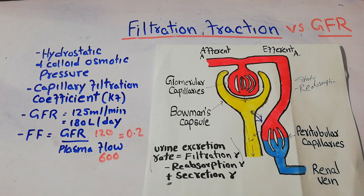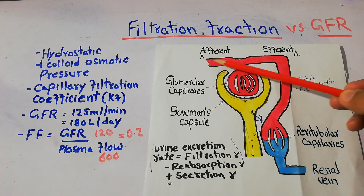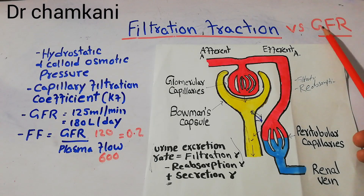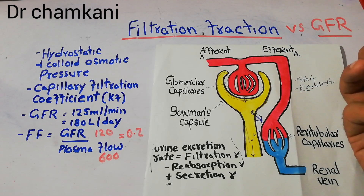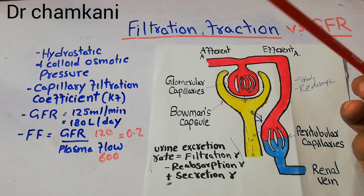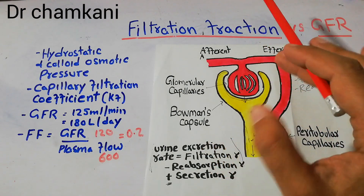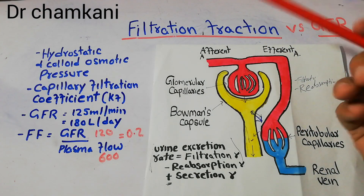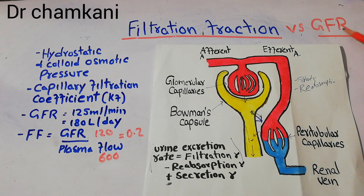Not all the plasma entering the kidney will get filtered. Some plasma will come into the glomerulus and go back without getting filtered. The GFR is the rate — it is the glomerular filtration rate, the speed with which filtration is occurring. But the fraction of plasma that gets a chance to be filtered is the filtration fraction. So we are here to differentiate and discuss these two things in detail. The GFR is simply the rate at which filtration occurs.